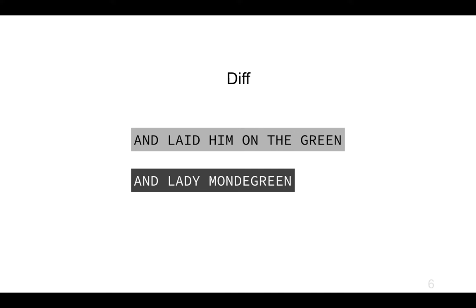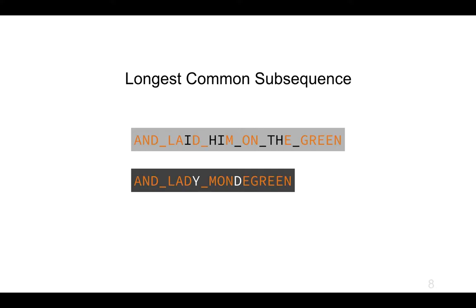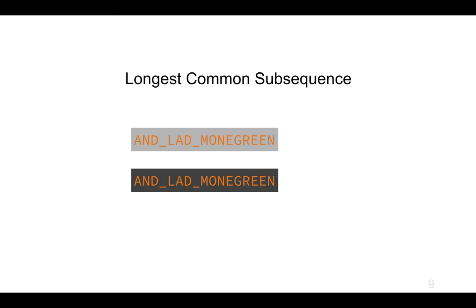There are lots of algorithms to do this — the Myers diff algorithm is one of the more famous ones. I've colored the common characters in orange and changed spaces to underscores so you can see them. They both start 'a', 'd', space, 'l', 'a', and then diverge slightly, but they both share 'green' at the end. That's the longest common subsequence.